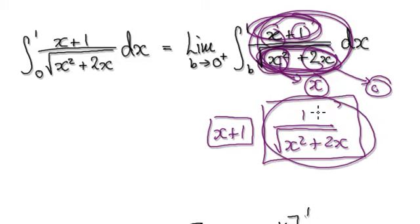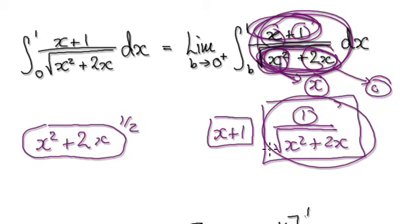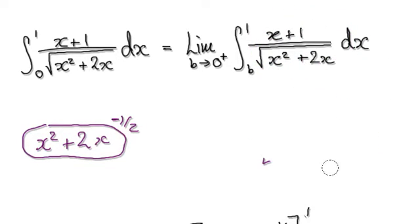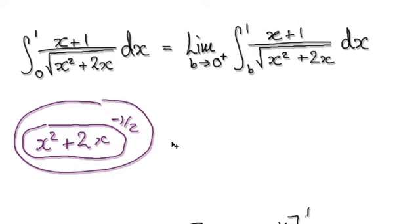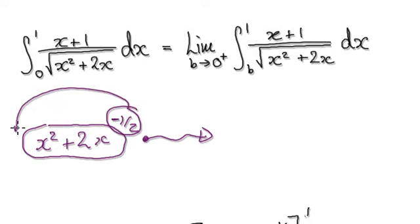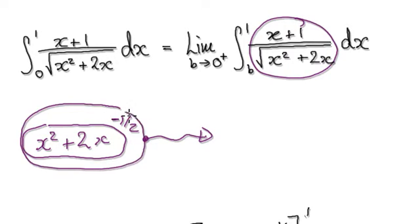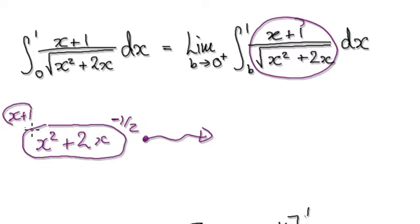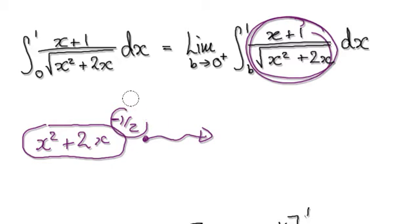Try and visualise this thing here as x squared plus 2x to the power of negative a half — because you've got 1 over the square root, it's going to be this. Currently, what we've got here is this thing here, and if we want to integrate it, we need one notch higher than this. So rather than negative a half, we would make our guess to be positive a half.